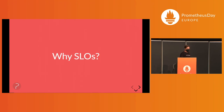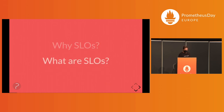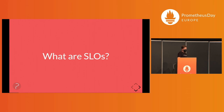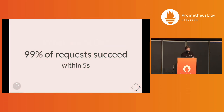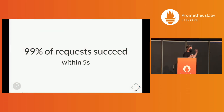So first, why SLOs? They reduce your flakiness in alerts and quantify things overall. What are they exactly? They quantify your service's reliability target, and you can make data-driven decisions about the reliability of your service. And I think we can agree that that's something we want. To formalize it a bit more, imagine an API, website, or something, and you want 99% of requests to succeed within five seconds, for example.